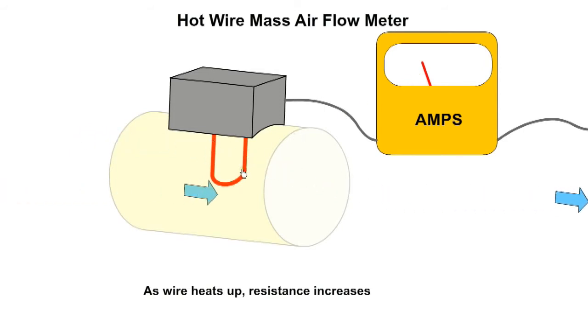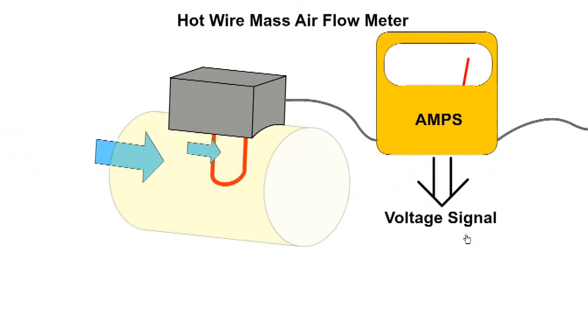When more air flows over the wire, it is cooled, resistance decreases, allowing additional current to flow until equilibrium is again achieved. The ECU uses the amount of electric current flowing to the heater to determine the mass of air flowing into the engine. It takes into account the temperature and density of the incoming air, and additional correction factors are not required.